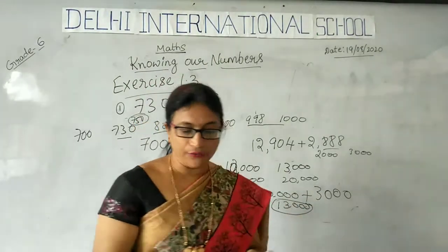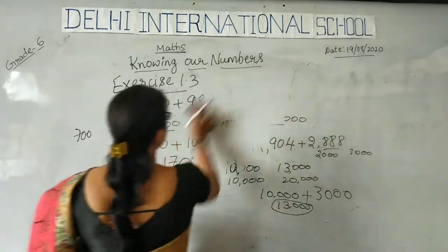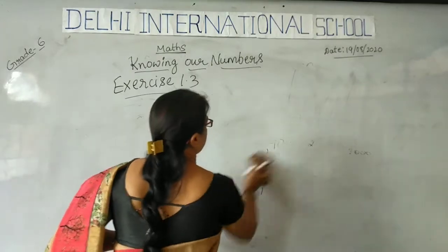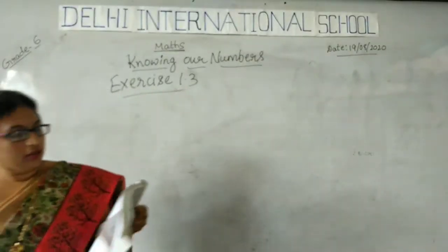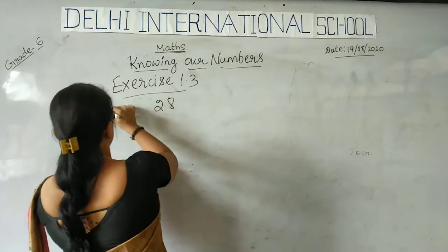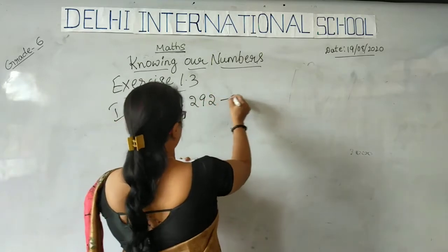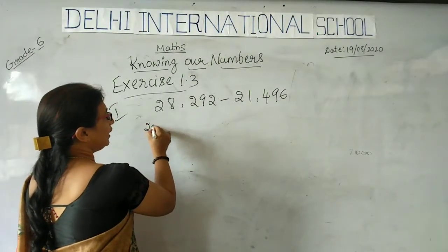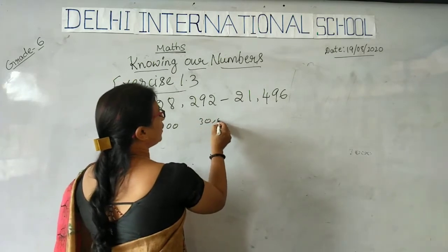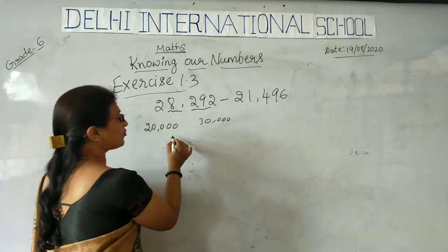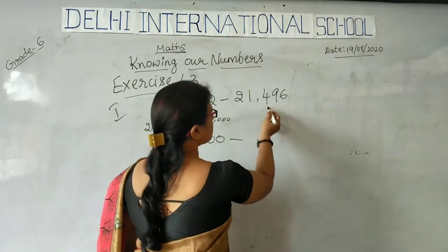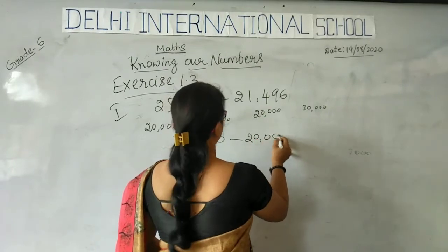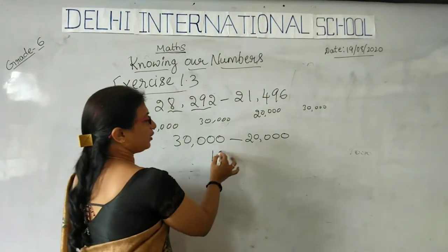Next, give a rough estimate by rounding off. We will do another problem — the last problem in the first method: 28,292 minus 21,496. So is 28,000 nearer to 20,000 or 30,000? It is definitely nearer to 30,000. So I write 30,000. Then 21,000 — is it nearer to 20,000 or 30,000? It is definitely nearer to 20,000. So 30,000 minus 20,000 is 10,000.